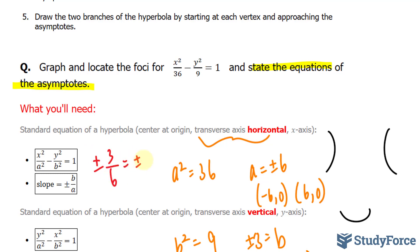This gives us plus minus 1 over 2. The equation for the asymptotes will be y is equal to plus minus 1 over 2 x.